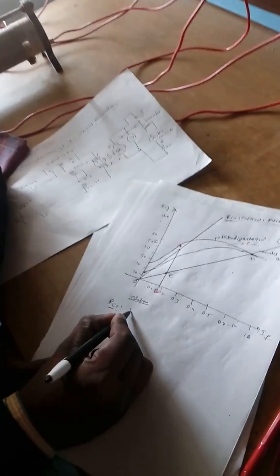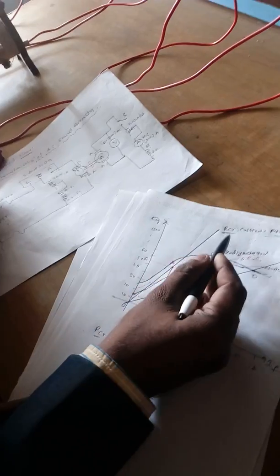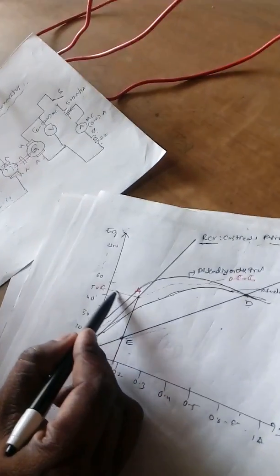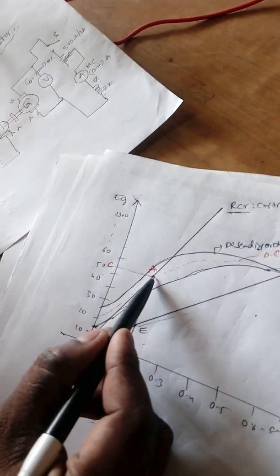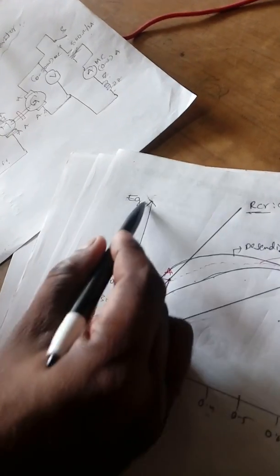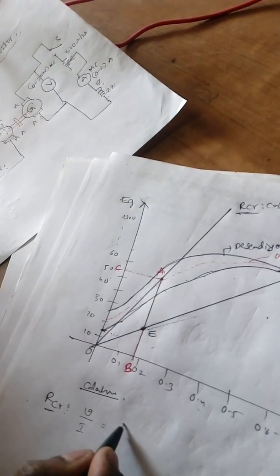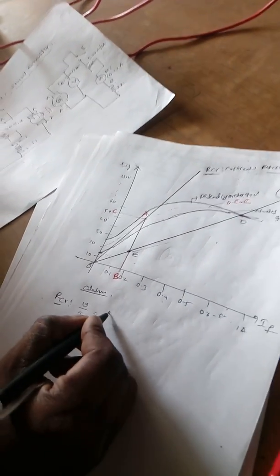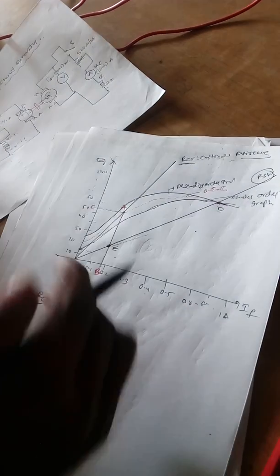Resistance is nothing but, simply according to Ohm's law, R is equal to V by I. So from this critical field resistance line, you need to join this line. Whenever this A point is touching C, it means this is the generated voltage — point C, meaning AC. The voltage here is OC.